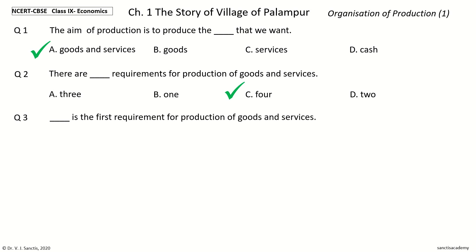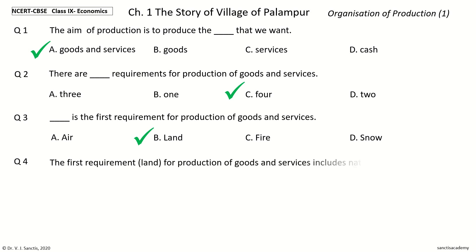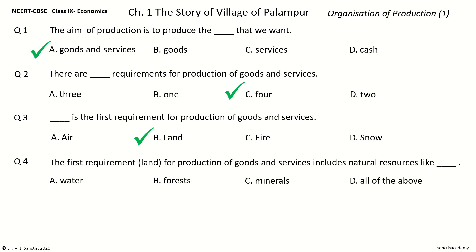Question 3: Dash is the first requirement for production of goods and services. The options are land, fire, or snow. The answer is land. So, land is the first requirement for production. Question 4: The first requirement, land, for production of goods and services includes natural resources like dash. The options are water, forests, minerals, or all of the above. The answer is all of the above — water, forests, and minerals.